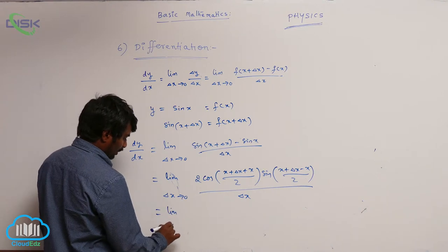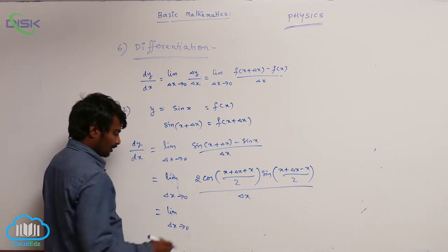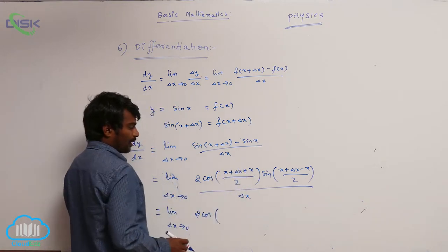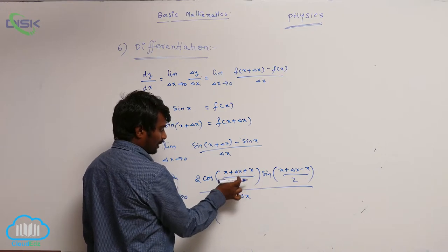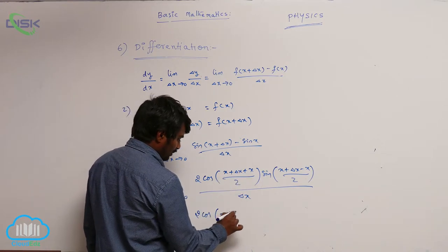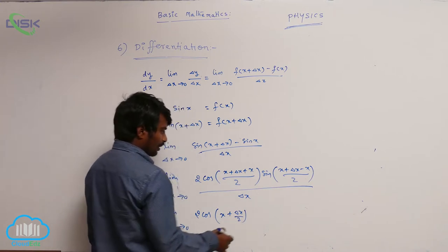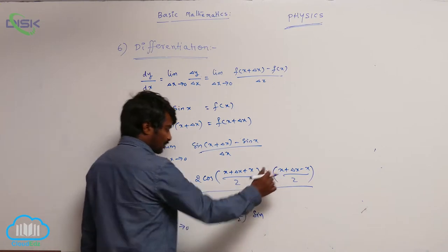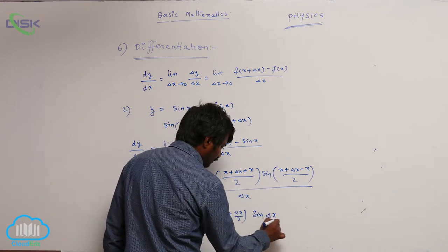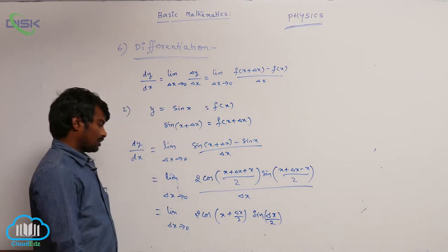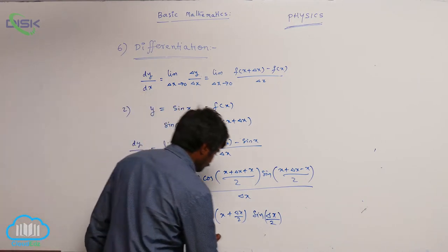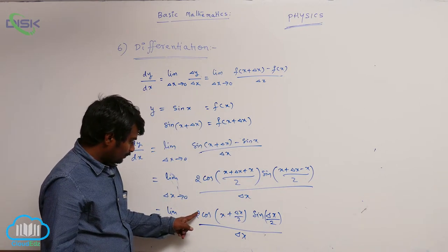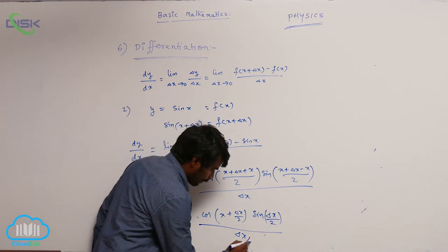This can be written as limit delta x tends to 0: 2 cos((2x plus delta x)/2), which is x plus delta x by 2. Then sin — the x's cancel — giving delta x by 2, over delta x. So I can write sin(delta x by 2) divided by delta x, times delta x by 2.